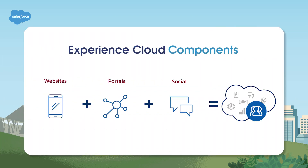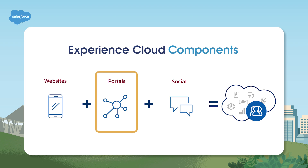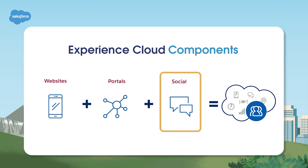Experience Cloud combines the best of three following components. Your website, where you can easily customize your branding, colors, and messaging. Customer portals, where you can safely share important data with customers, manage relationships with partners, and offer case management and deflection. And finally, a social component that uses chatter functionality to connect community members in discussion forums and groups.